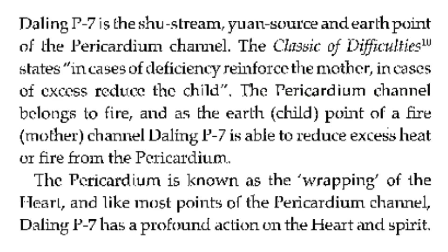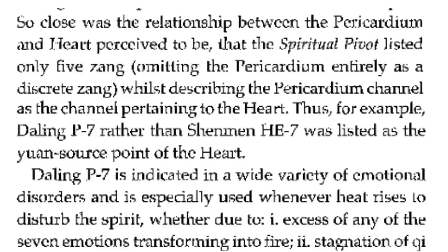The pericardium is known as the wrapping of the heart, and like most points of the pericardium channel, Pericardium 7 has a profound action on the heart and spirit. So close was the relationship between the pericardium and heart that the Spiritual Pivot listed only five zang, omitting the pericardium entirely as a discrete zang, whilst describing the pericardium channel as the channel pertaining to the heart. Thus, Pericardium 7 rather than Heart 7 was listed as the Yuan source point of the heart.